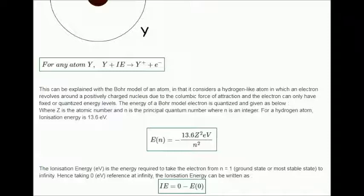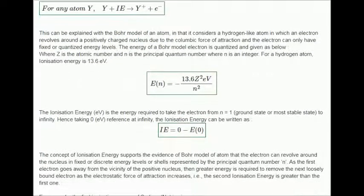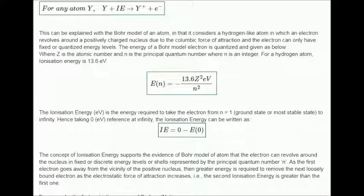For a hydrogen atom, ionization energy is 13.6 electron volts. The ionization energy (eV) is the energy required to take the electron from n equals 1, ground state or most stable state to infinity. Hence, taking zero eV reference at infinity, the ionization energy can be written as shown here.